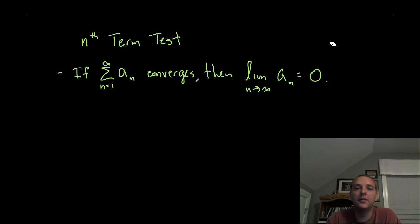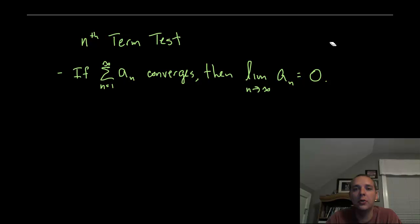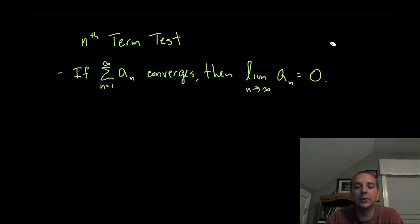When studying the convergence or divergence of an infinite series, one of the first tests you typically learn is the nth term test. The nth term test will not necessarily tell you when a series converges, but it will tell you when it doesn't converge, so it can be a very helpful test. If you know that your series converges, then it promises you that the limit as n approaches infinity of those terms is going to be zero.